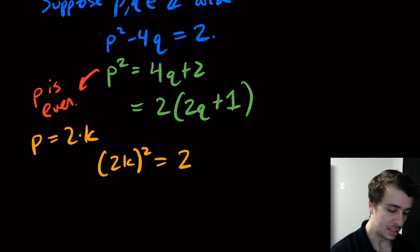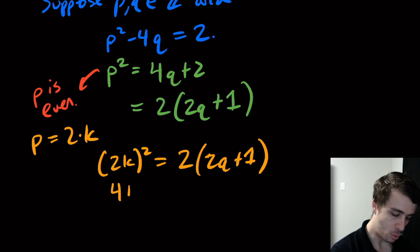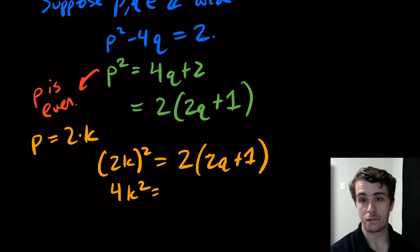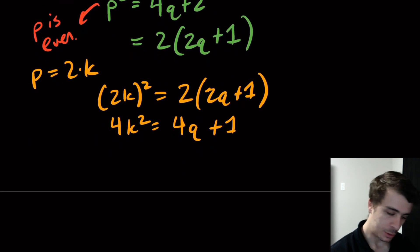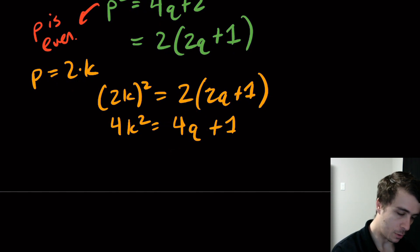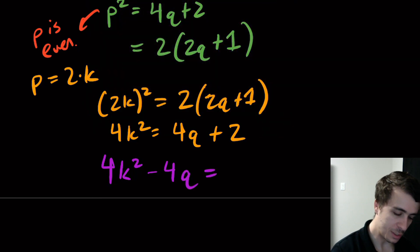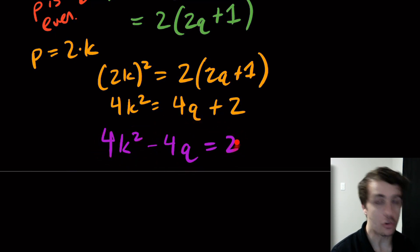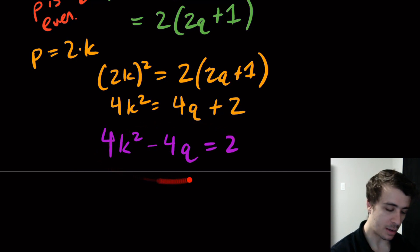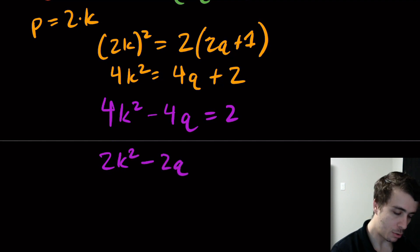Substituting p equals 2k, we get (2k) squared equals 2 times (2q plus 1), giving 4k squared equals 4q plus 2. Moving 4q to the left gives 4k squared minus 4q equals 2. Every coefficient here is even, so we divide both sides by 2 to get 2k squared minus 2q equals 1.